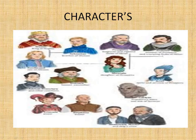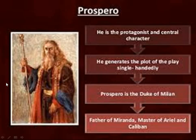Here are the pictures which you will like to have a glimpse of. I would like to describe Prospero first, because he is the main figure in the play. He is the protagonist and a central character. He generates the plot of the play single-handedly. Prospero is the Duke of Milan, father of Miranda, and master of Ariel and Caliban.